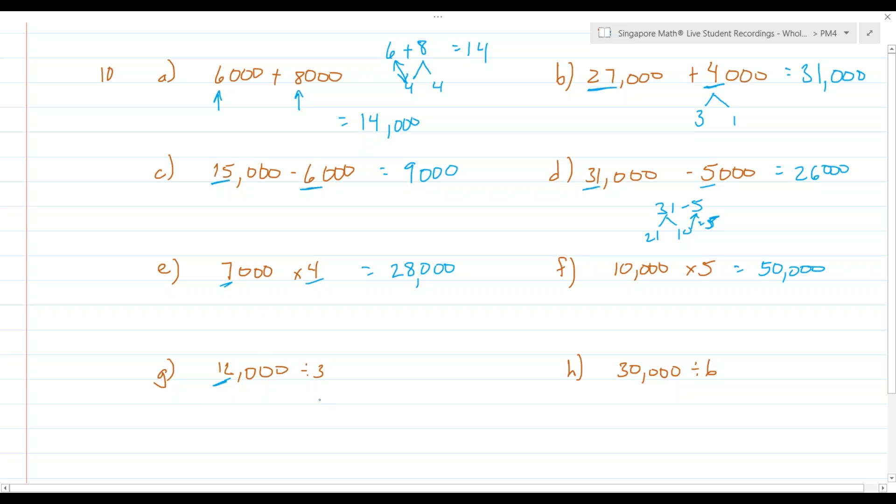Then if you take 12,000 and divide it into three groups, you have 4,000. And if you take 30,000 and divide it into six groups, there's 5,000.